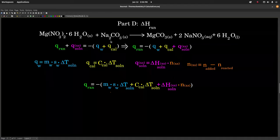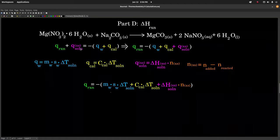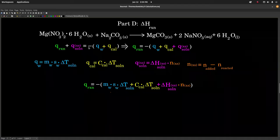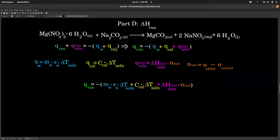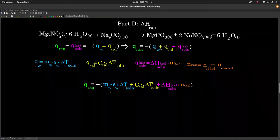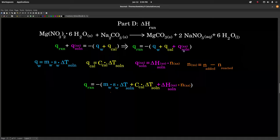Whichever reactant is in excess will have an energy change associated with it — depending on whether its heat of solution is exothermic or endothermic, the excess reactant is going to dissolve and either release or absorb energy. We need to take that into account, and that's what this term represents. On the other side, we have the water and the calorimeter — the thermal energy going into or out of those. If we solve for Q of reaction by subtracting Q of the solution of the excess reactant, we get our expression for Q of reaction.